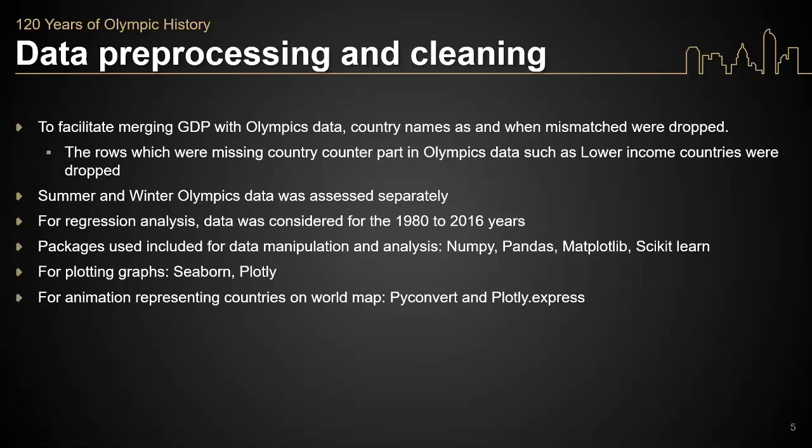Interestingly, in the GDP data, some countries were labeled as low-income countries. Since we did not know what those countries were, they were dropped. In our analysis, we separated the Winter and Summer Olympics from each other because different countries excel at different sports, and we didn't want any biases between our analyses. In our regression analysis, we only considered data from 1980 to 2016.